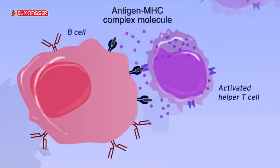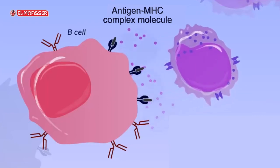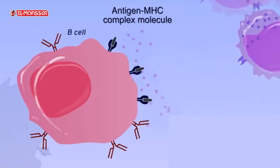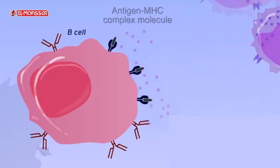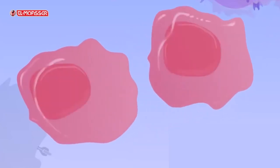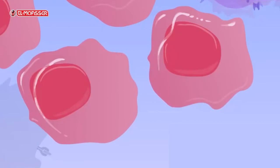The activated helper T cells bind to B cells through the CD4 receptor present on their surface, and then secrete interleukin substances to activate the B cells. The B cells divide several times and differentiate into two types: plasma B cells and memory B cells.